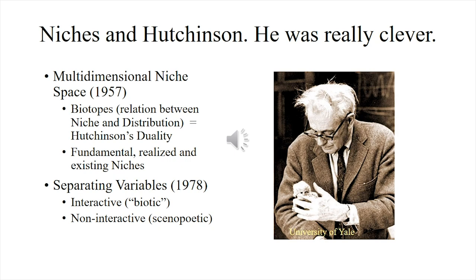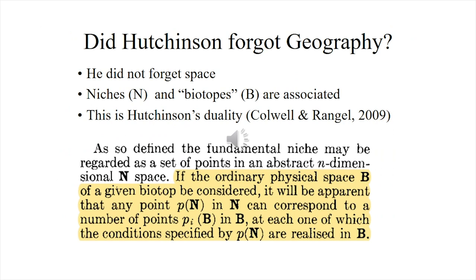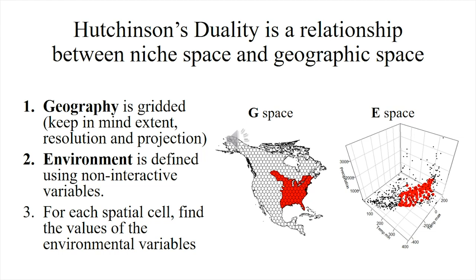All of those were mentioned by Hutchinson in one publication or another. It is often said that Hutchinson forgot about geography. Maybe, but he didn't forget about space. He defined the idea of a biotope that most people forgot. If you have a point in niche space, biotopes are the localities that correspond to those values of environment. This is an extremely important idea, and it is a pity that Hutchinson just gave it a few lines in the famous Cold Spring Harbor Symposium paper. This relationship between niche and geographic space has been given the name of Hutchinson's duality by Rob Caldwell and Thiago Rangel.